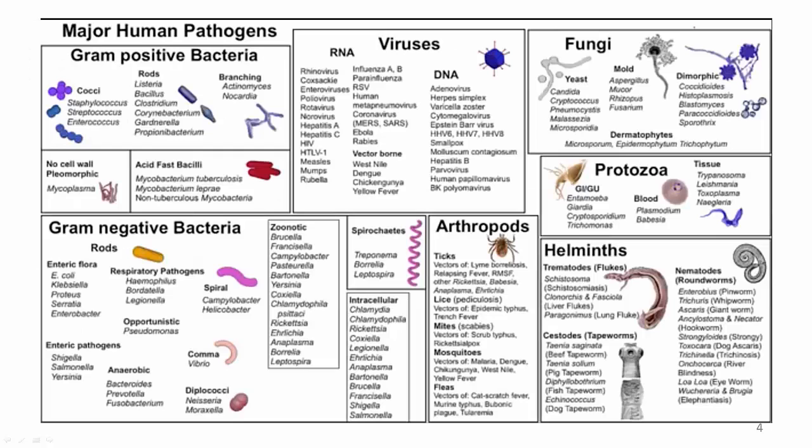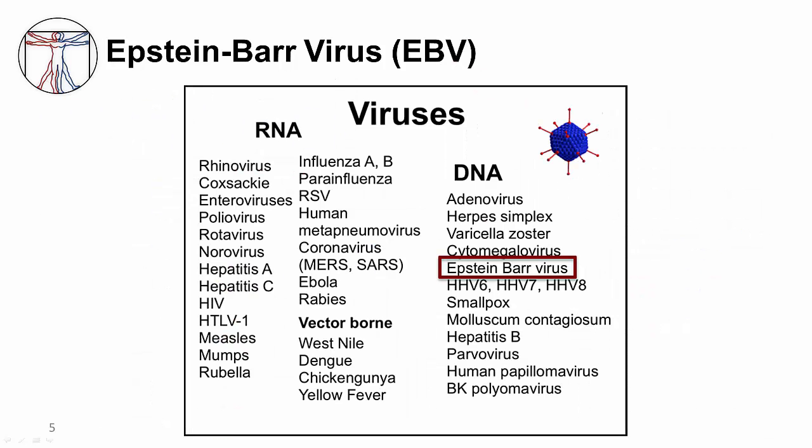This is our pathogen map, and for this video I'm focusing on viruses, particularly the DNA viruses, and specifically Epstein-Barr virus, which is one of the eight human herpes viruses.